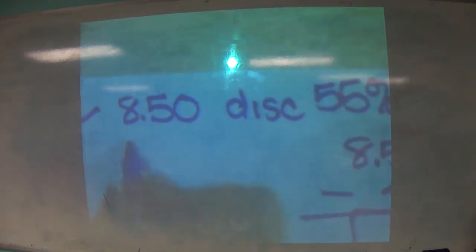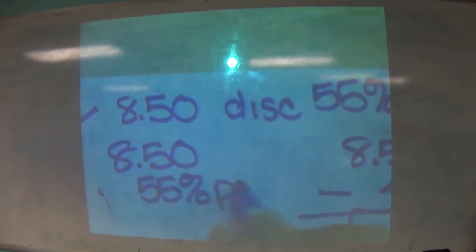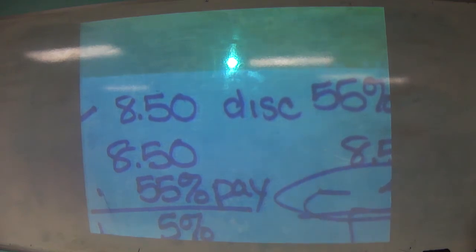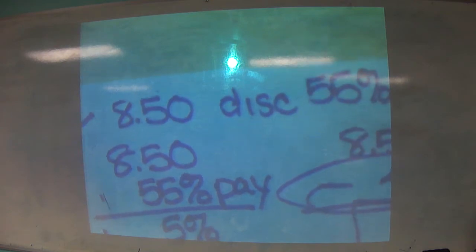Or you can do $8.50 times 55%, which is what you're going to pay, that's the sale price, and then adding 5%. And then you don't have to do that extra problem of subtracting, because you also have to multiply by 45% to get that number that you're going to have to subtract. So on this one, let's try 8.50 times, well, let's think about this.